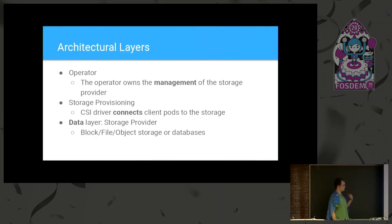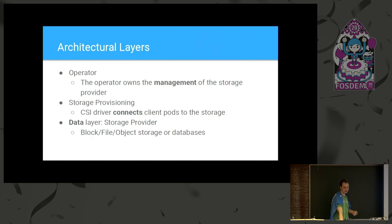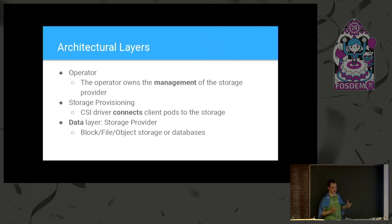Moving to architecture. There are three layers. The operator layer manages and configures Ceph. Importantly, it's not on the data path — so if the operator goes down, I/O doesn't stop. For storage provisioning, we use the CSI — the Container Storage Interface. It's a common solution for general storage: you say 'give me 50 gigs of storage' and on a node it mounts that storage. Previously we had written our own flex volume driver, which was a pain to maintain.